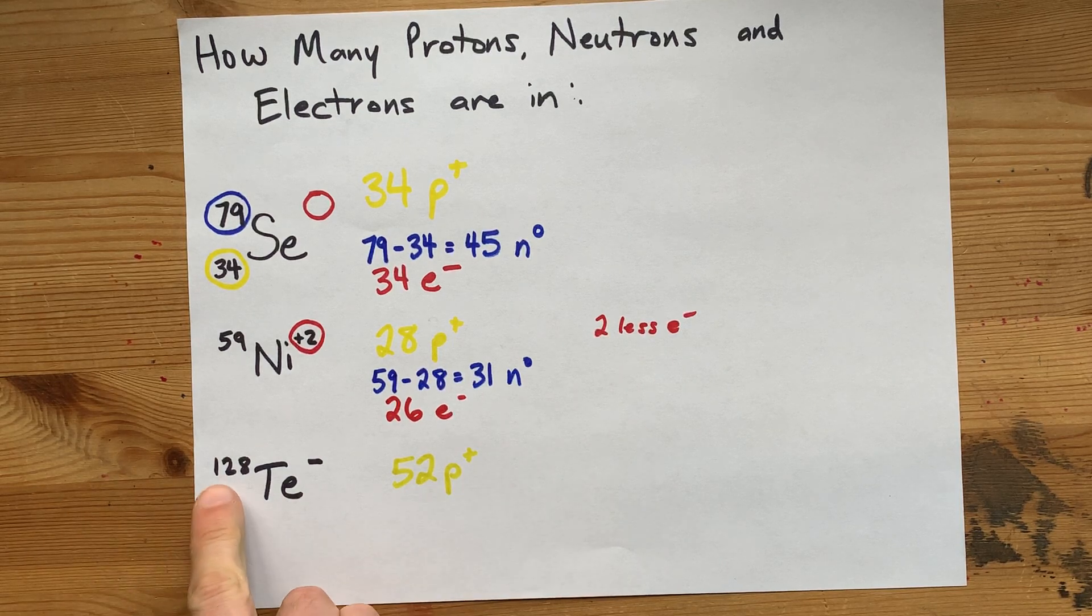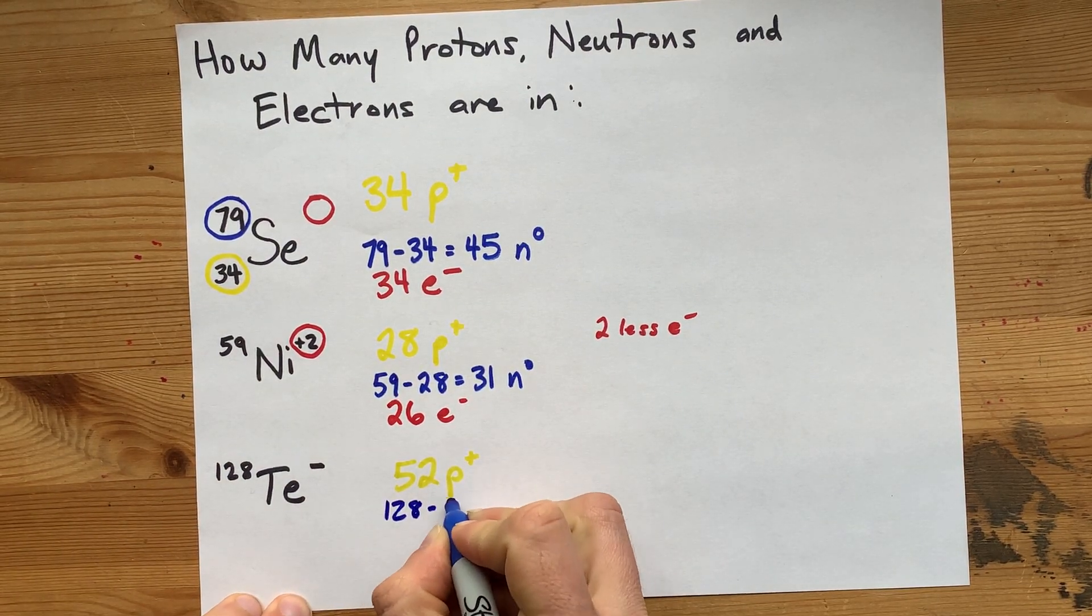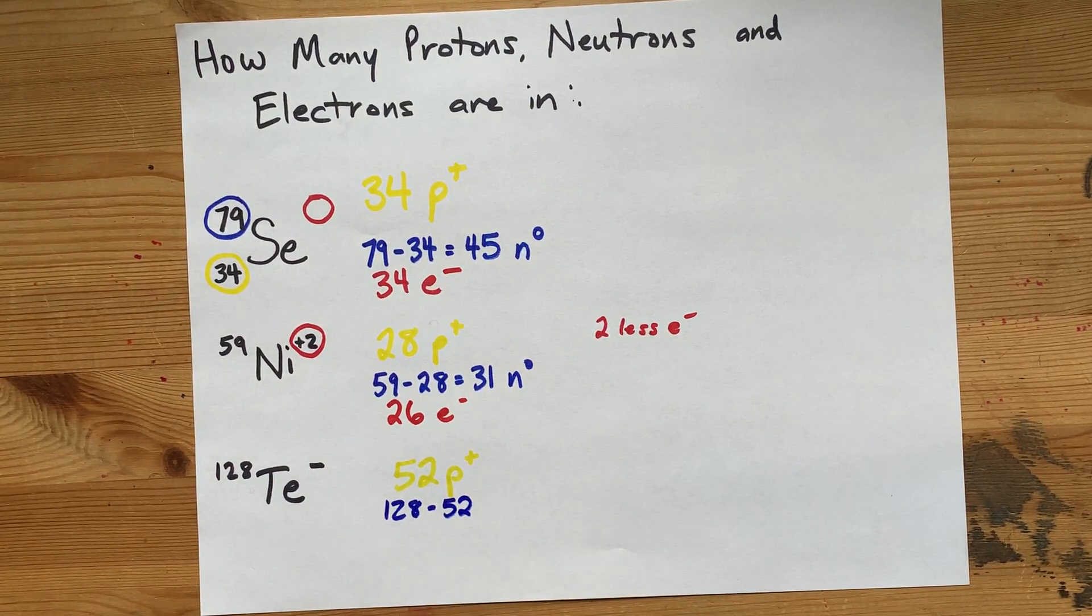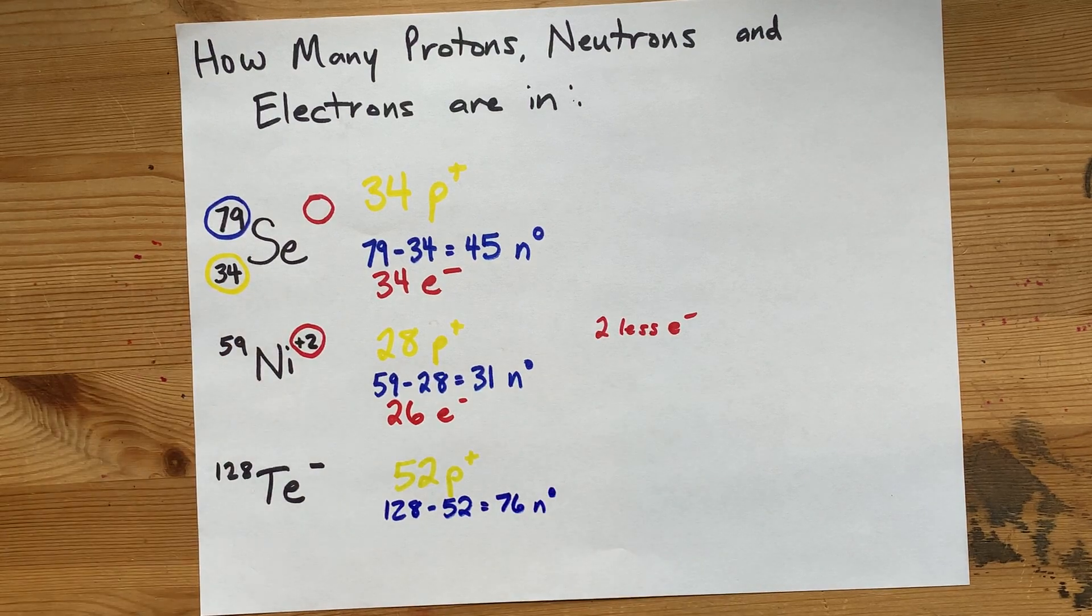How do we do neutrons? It's the mass number, 128, minus the number of protons. Now, if you do that, you get 76 neutrons.